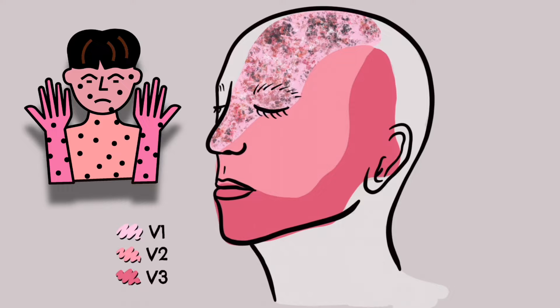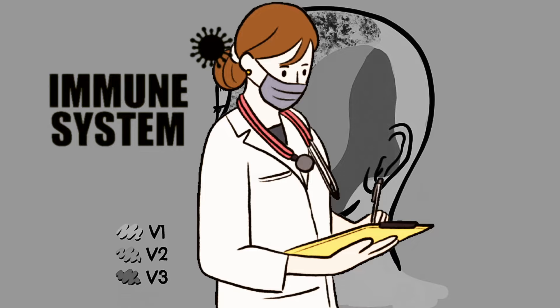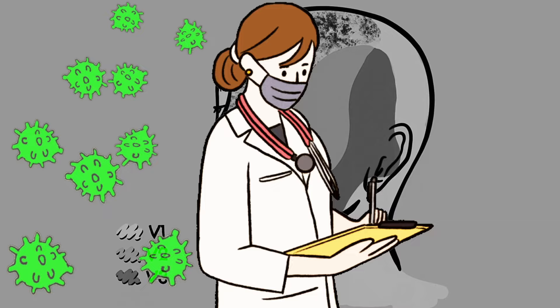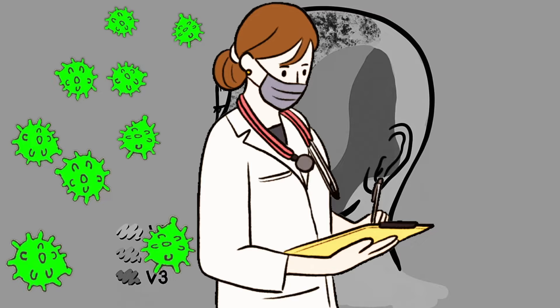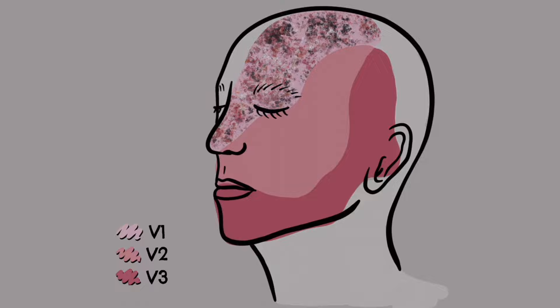Unless the immune system is compromised, the varicella zoster virus is usually suppressed. However, when the immune system is weakened, the virus can reactivate from its dormant state to replicate in nerve cells to form the herpes zoster virus, which is the reactivated form of the varicella zoster virus.